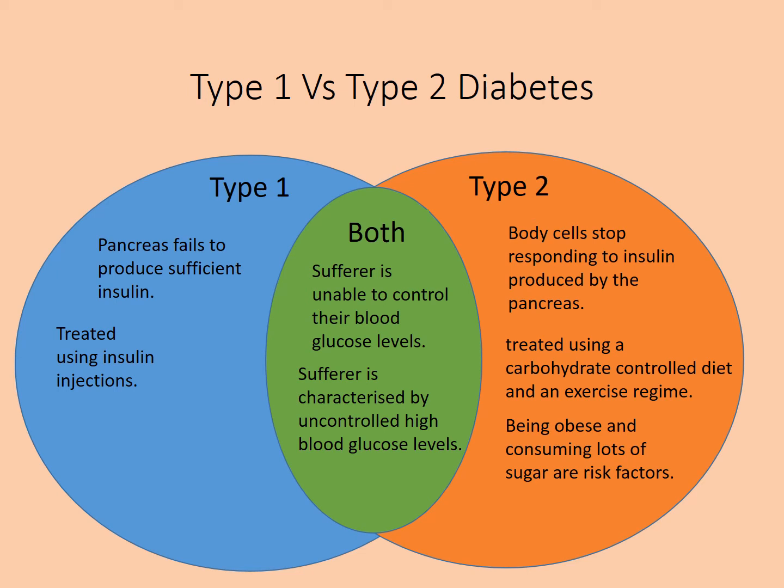A risk factor for type 2 is obesity and consuming lots of sugar — not the case with type 1, which is inherited or develops early in life. Type 1 cannot be prevented. Type 2, however, can potentially be prevented or its development stopped by lowering carbohydrate intake, losing weight, and increasing exercise.